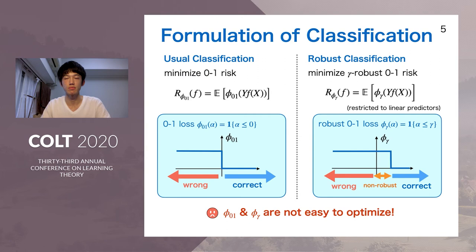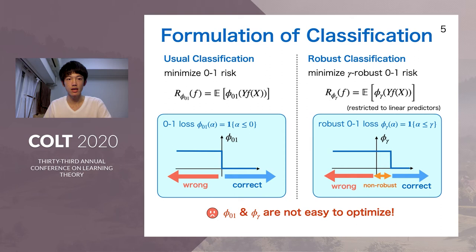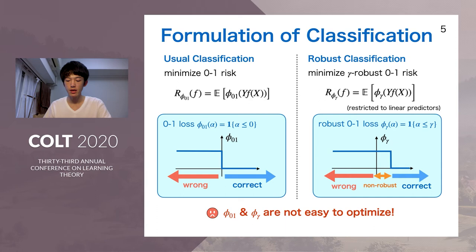Here we compare the formulations. In usual classification, our goal is to minimize zero-one risk, which is the expectation over zero-one loss: if the margin is on the positive side, it is a correct prediction, otherwise it is a wrong prediction. In robust classification, we instead minimize robust zero-one risk. The negative side remains the same — wrong predictions — but the positive side is slightly different: if the prediction margin is smaller than gamma, we consider this a non-robust prediction even if it is technically correct, so we still penalize. Thus, robust zero-one loss is a horizontally shifted version of the original zero-one loss.